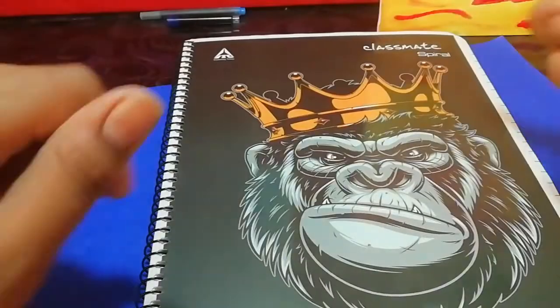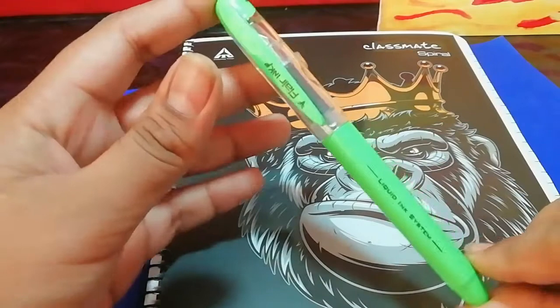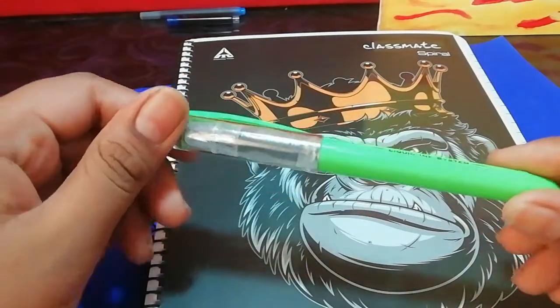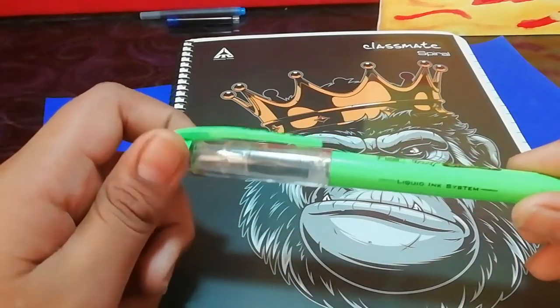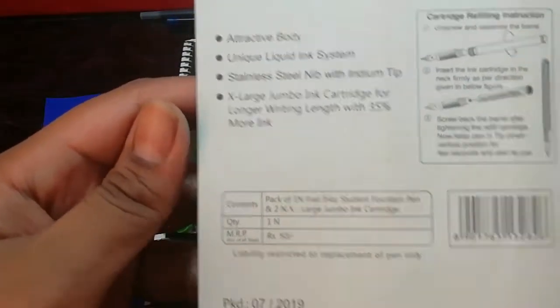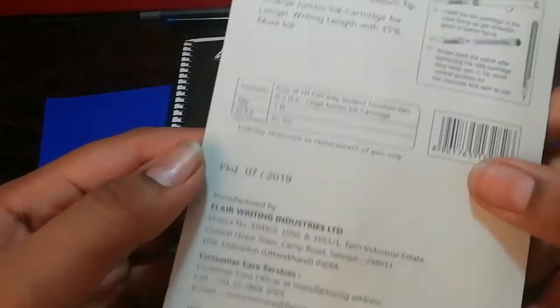Now let's talk about the things which I like about it and the things which I don't like about it. The things which I like: the color is good and there are many color options. Also, it's value for money. The price is just 50 rupees.